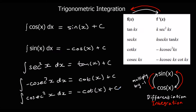You can always check these answers by differentiating them: if you differentiate sin x you get cos x, if you differentiate negative cos x you get sin x, if you differentiate tan x you get sec² x. So trigonometric integration is just trigonometric differentiation in reverse.